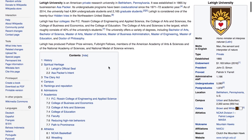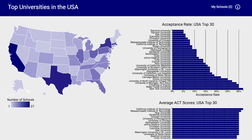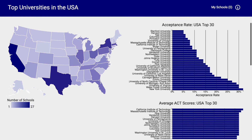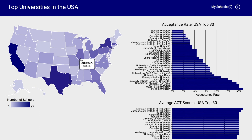Some interesting findings we discovered through this visualization: the population of a state and the number of top schools in that state were very highly correlated. You can see that California, Texas, and New York all had the most schools and also have the highest populations of U.S. states.